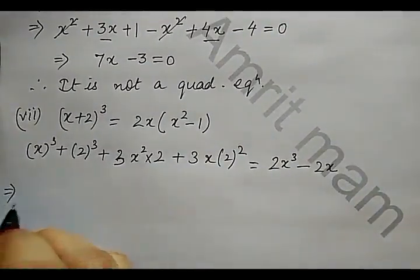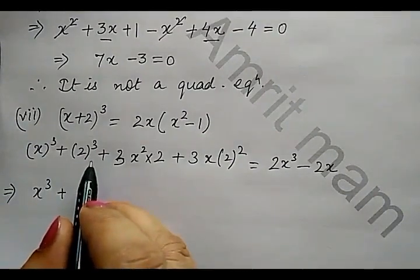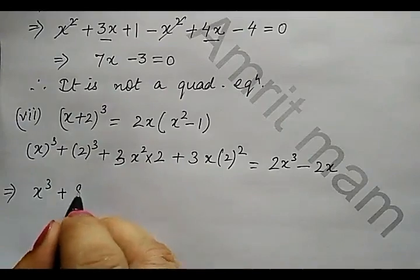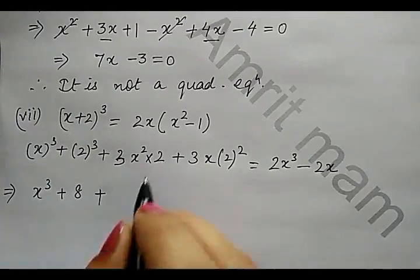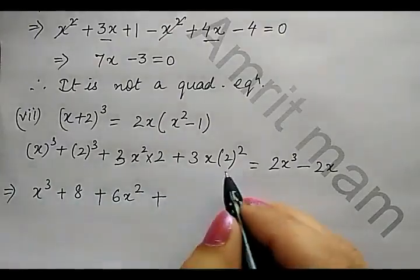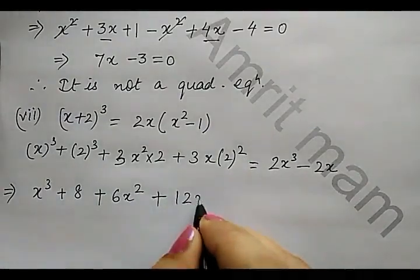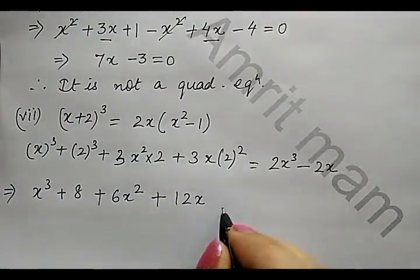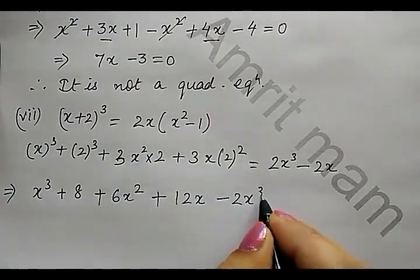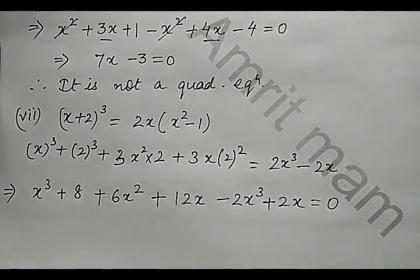So what we get: x cube plus 2 into 2 into 2 that is 8, plus 3 times 2 gives 6x squared, plus 2 square is 4, 4 times 3 is 12x. Taking all the terms to one side minus 2x cube plus 2x equals 0.